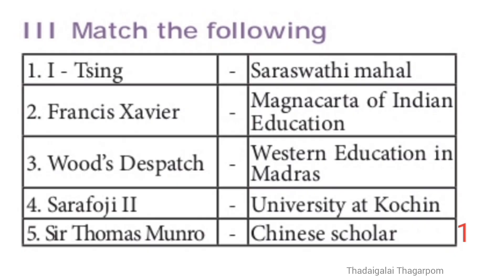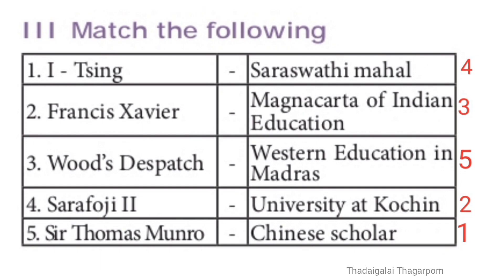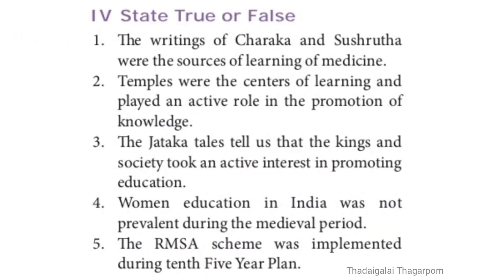Section 3 — Match the Following. 1. I-Tsing — Chinese scholar. 2. Francis Xavier — University at Cochin. 3. Wood's Dispatch — Magna Carta of Indian Education. 4. Serfoji II — Saraswathi Mahal. 5. Sir Thomas Munro — Western Education in Madras. The correct order is 4, 3, 5, 2, 1.